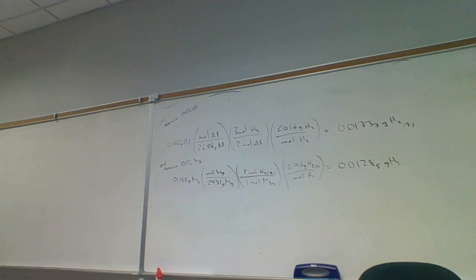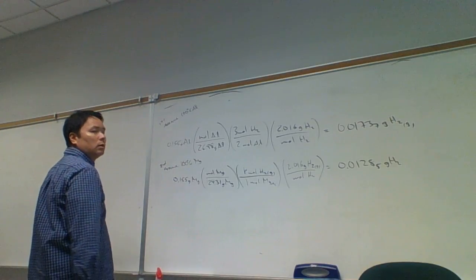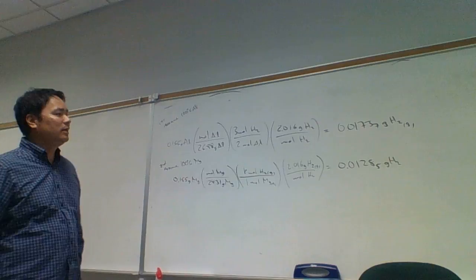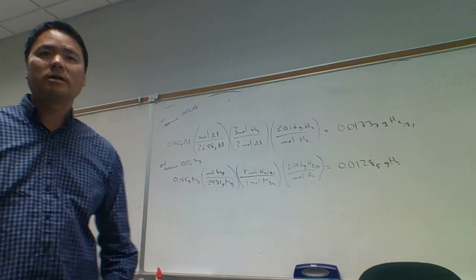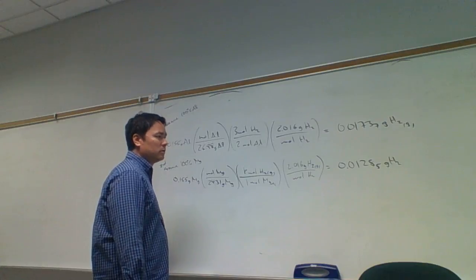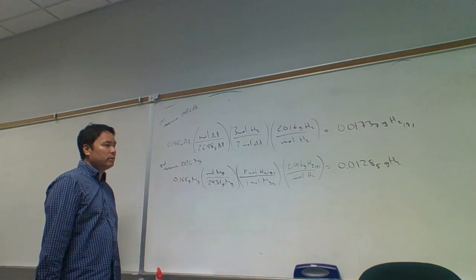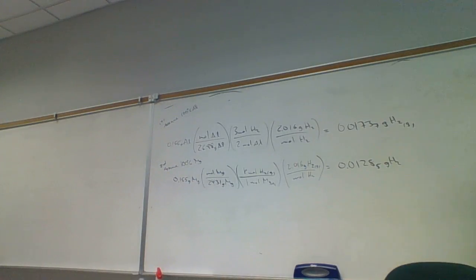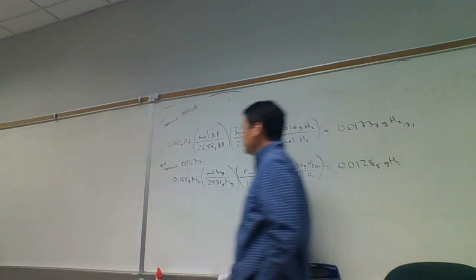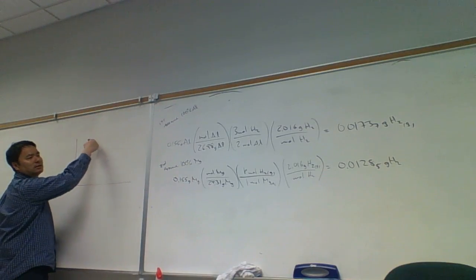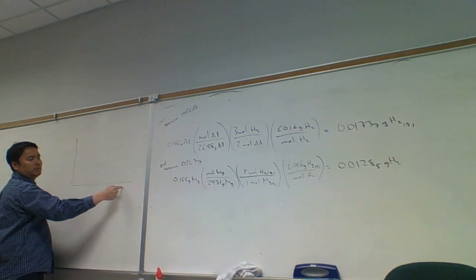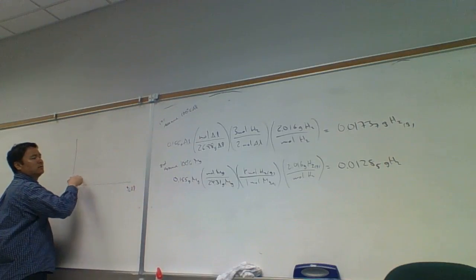We could solve for either percent aluminum or percent magnesium, since they add up to 100%. I'd say percent aluminum is more convenient. Even though they're asking for percent magnesium, I'm going to solve for percent aluminum because it will give me a positive slope. If I put percent magnesium on the x-axis, the higher the percent magnesium, the less hydrogen I generate — that gives a negative slope. Whereas percent aluminum gives a positive slope.